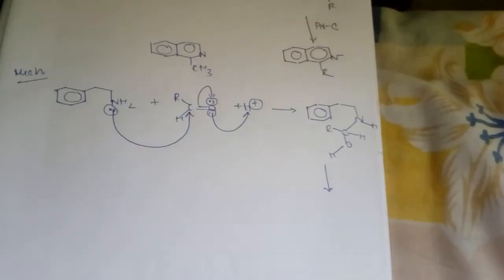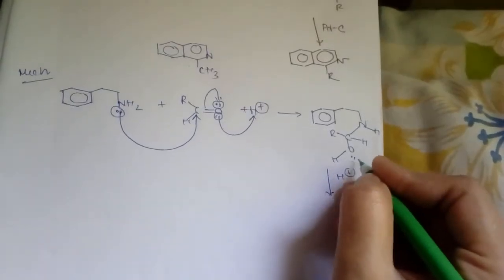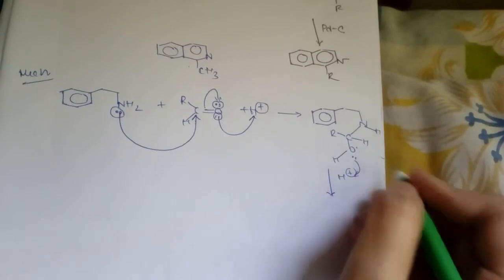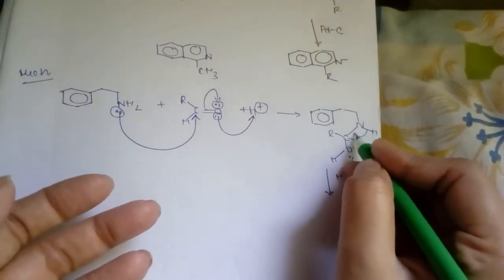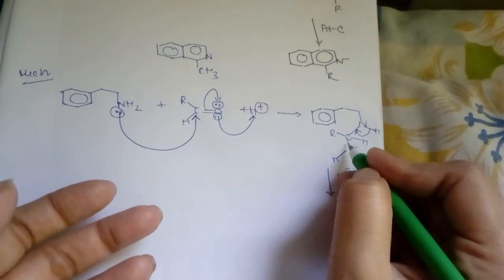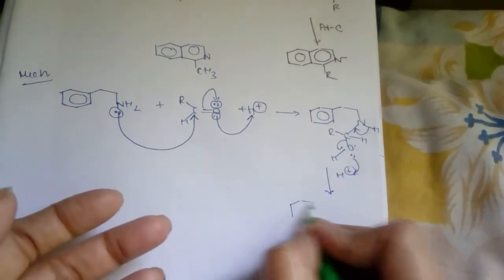Now this OH, taking a H plus, forms OH2 positive and by breaking this hydrogen and nitrogen bond, OH2 will leave as leaving group and then this will form.